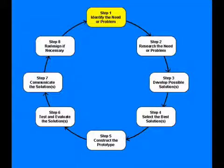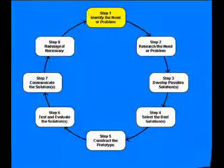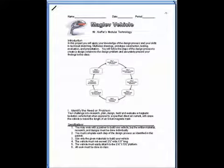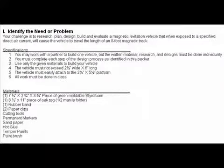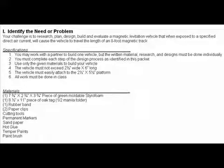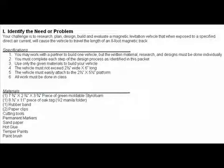The first step of the design process is to identify the problem or need. All steps of the design process were laid out in the project package. The problem or need for this project was to research, plan, design, build, and evaluate a magnetic levitation vehicle that, when exposed to a specified direct air current, will cause the vehicle to travel the length of an 8-foot magnetic track.